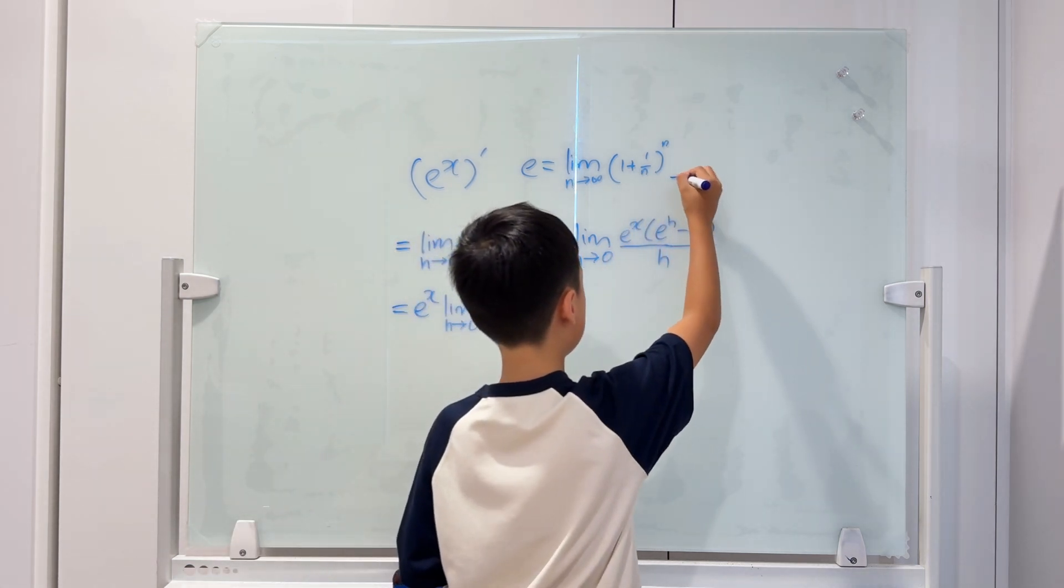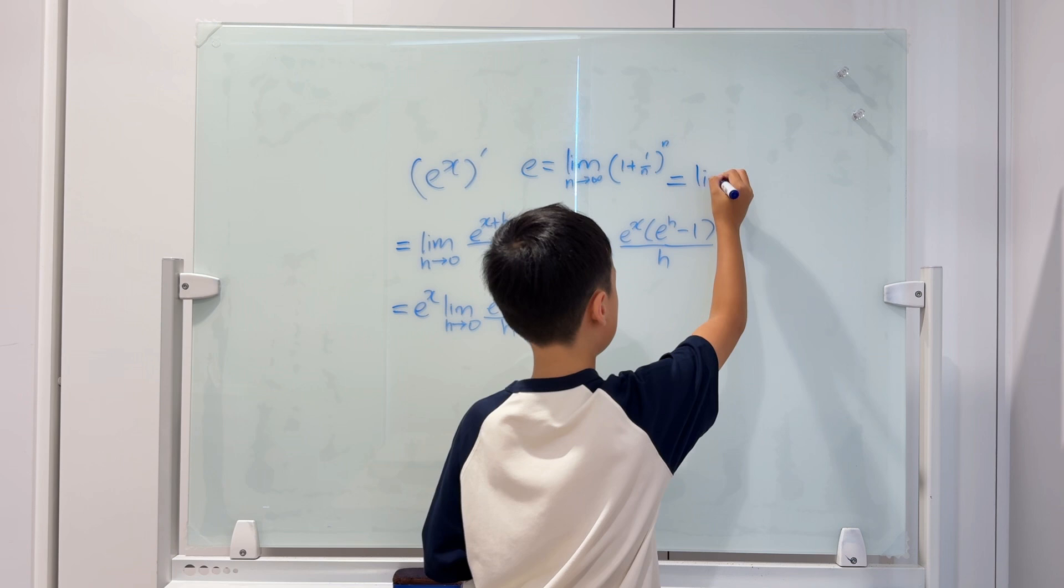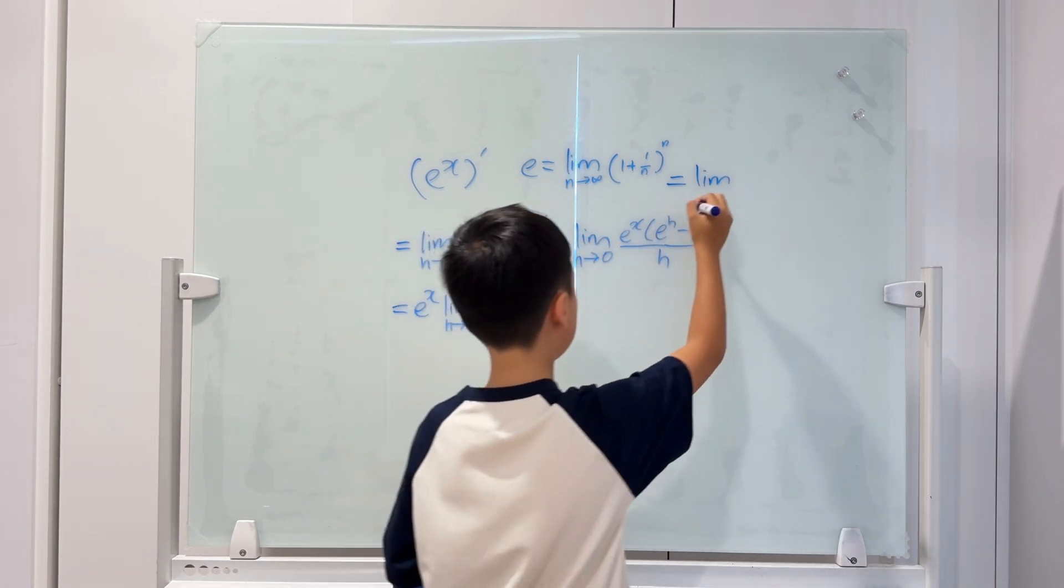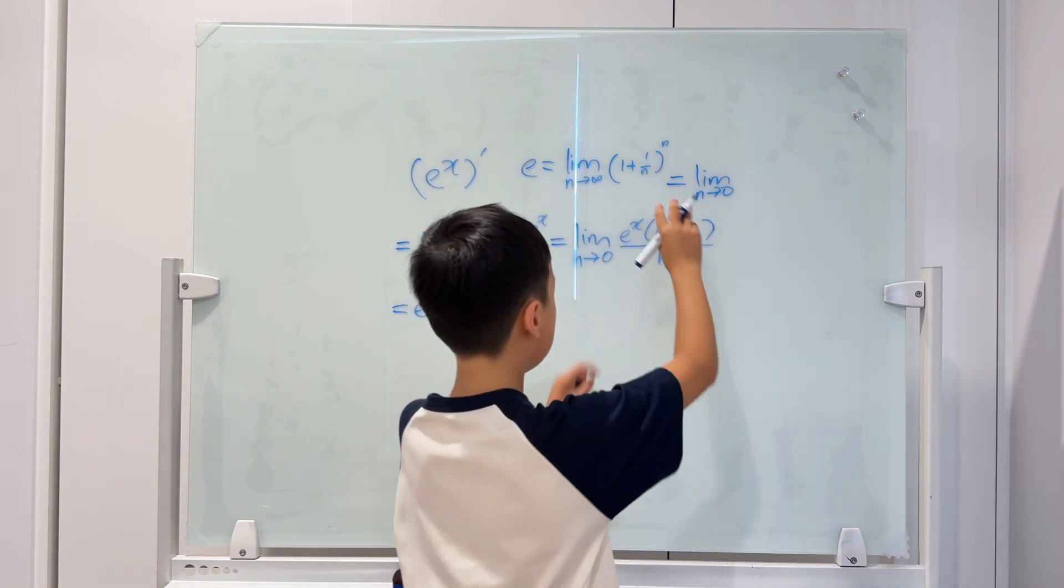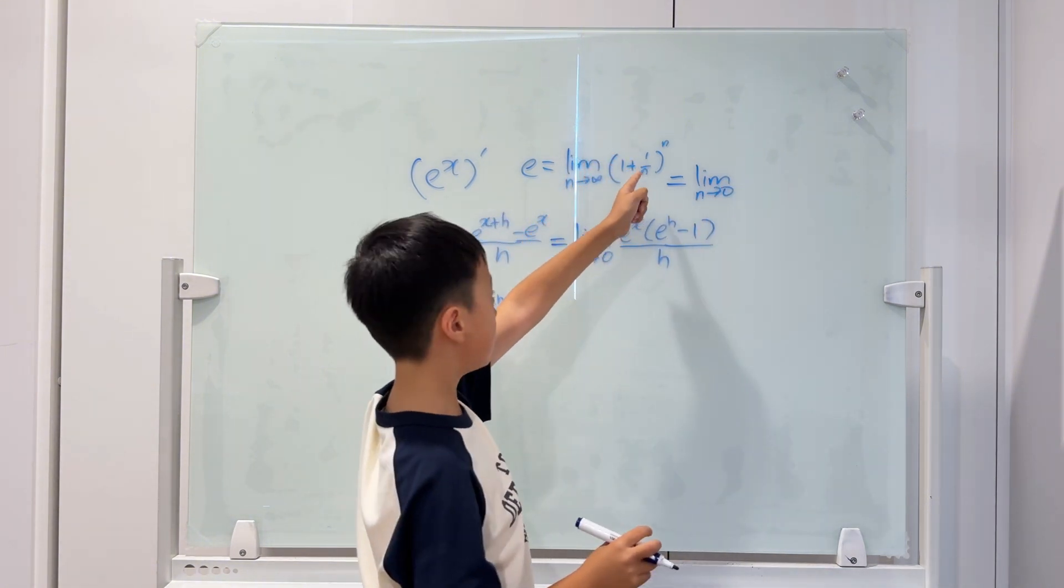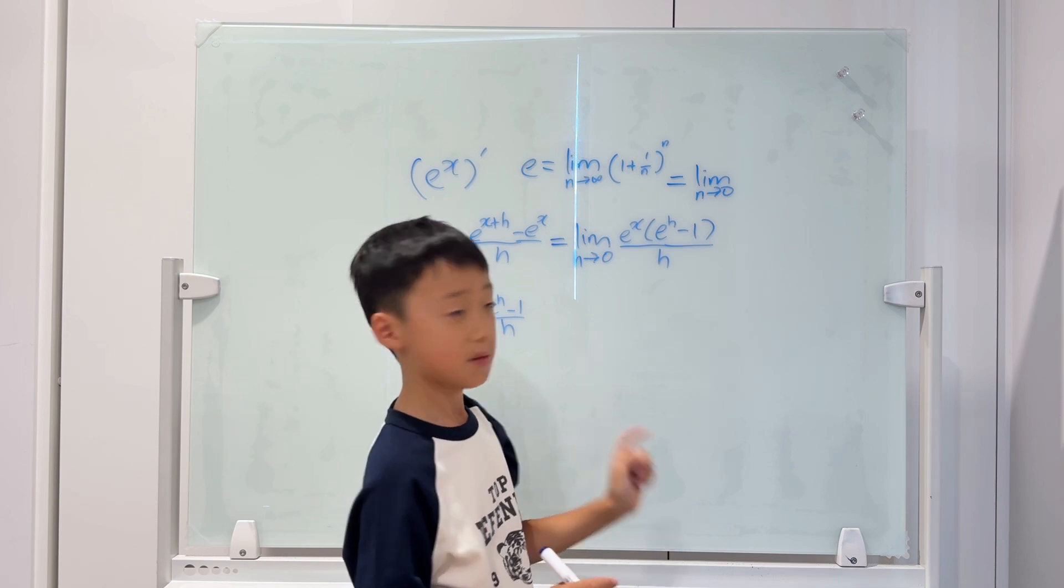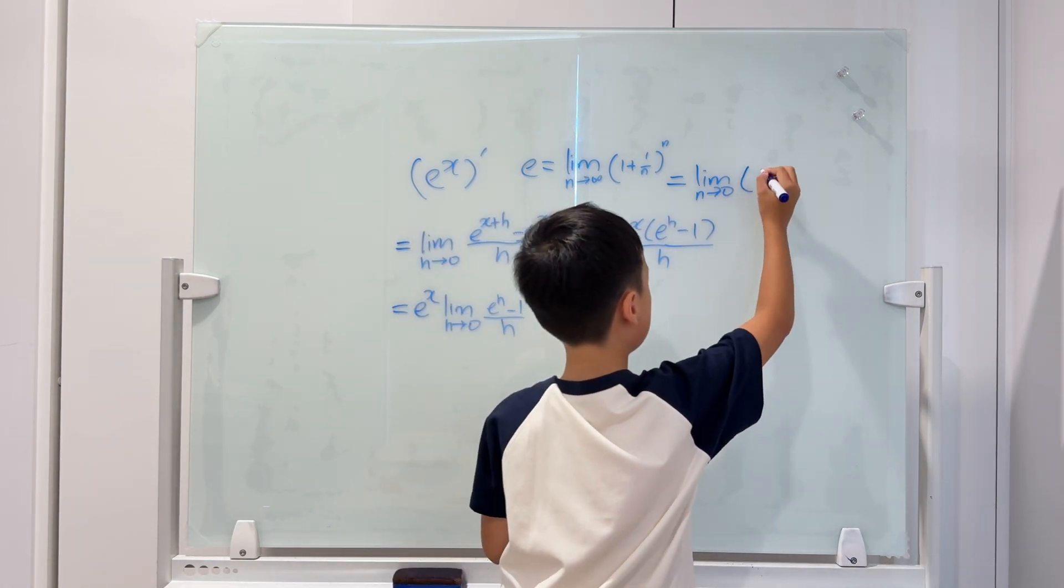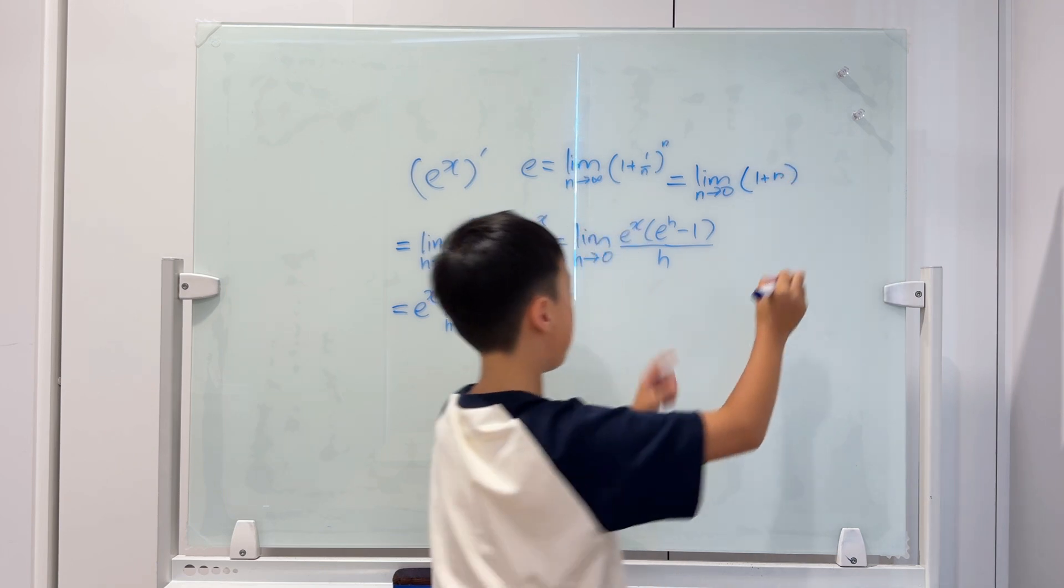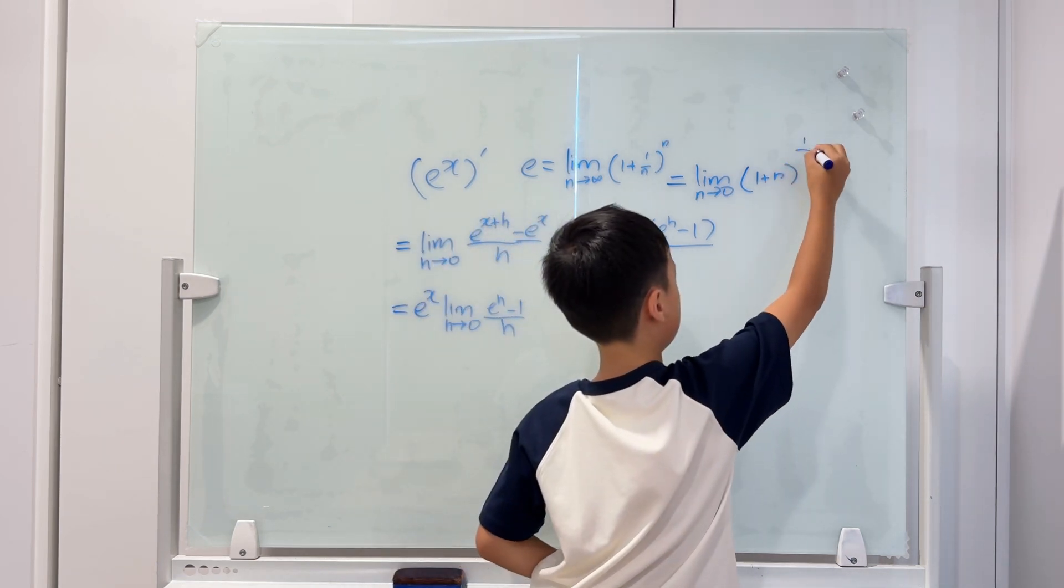The other way is limit. This time, it's not n going to infinity. It's n going to 0. And then, this inside the brackets, this one is 1 over n. But for this new one, we'll just change it into n. And then we will change the power into 1 over n.